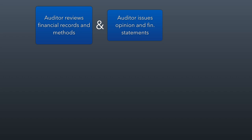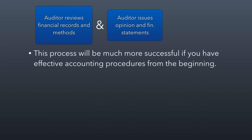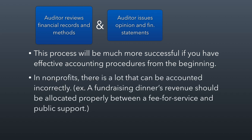When the auditor reviews the financial records and your accounting methods and then issues a statement, this process works a lot better if you have effective accounting procedures from the beginning. You want to make sure you're not being sloppy in your accounting because it makes the job much harder for the auditor. There is a lot in nonprofits that can be accounted for incorrectly — for example, the revenue from a fundraising dinner shouldn't just be considered fundraising revenue. It should be allocated between the cost of the dinner and what it would cost that person to buy that dinner elsewhere, with the surplus accounted as a donation or public support. The auditor is going to be looking for things like this to make sure the books are being kept in the proper way.